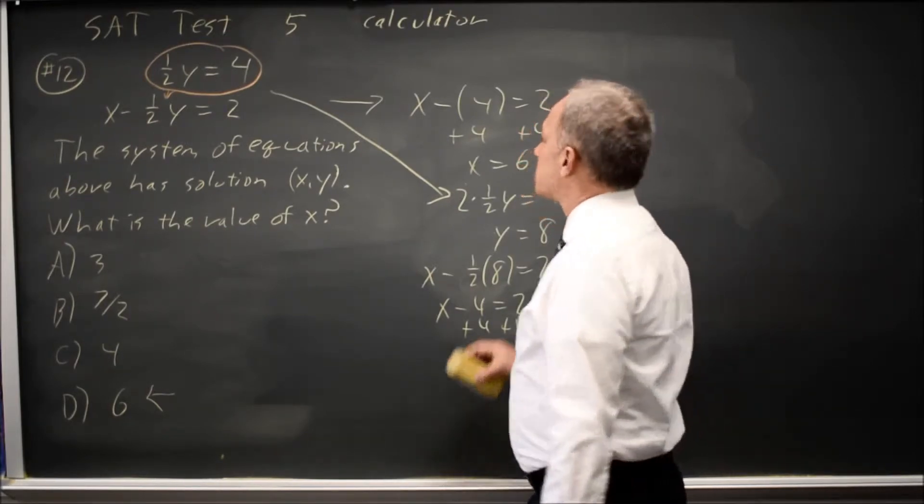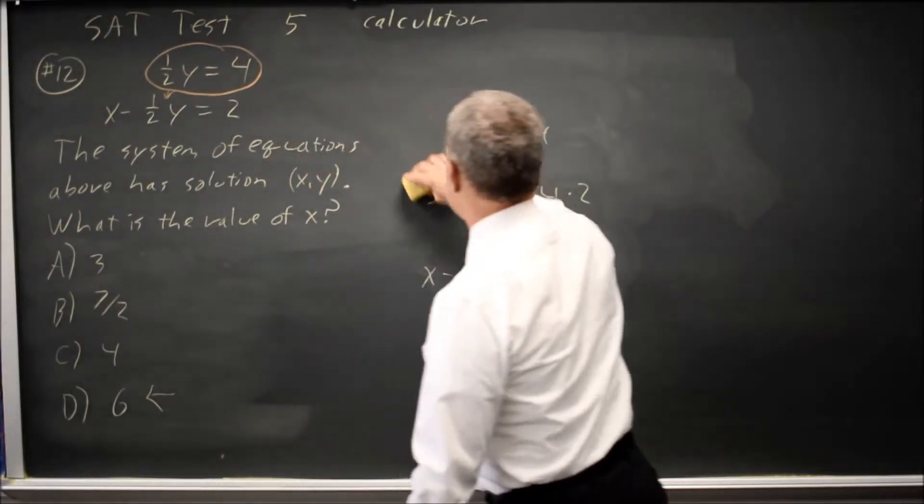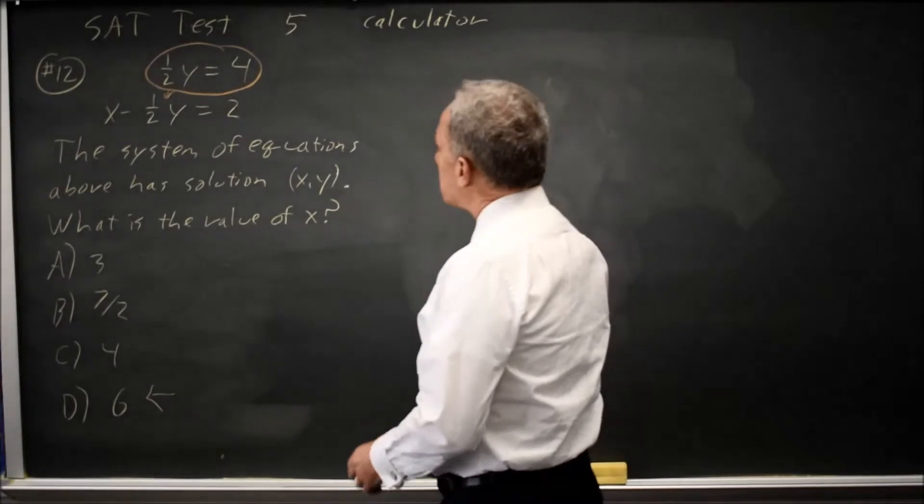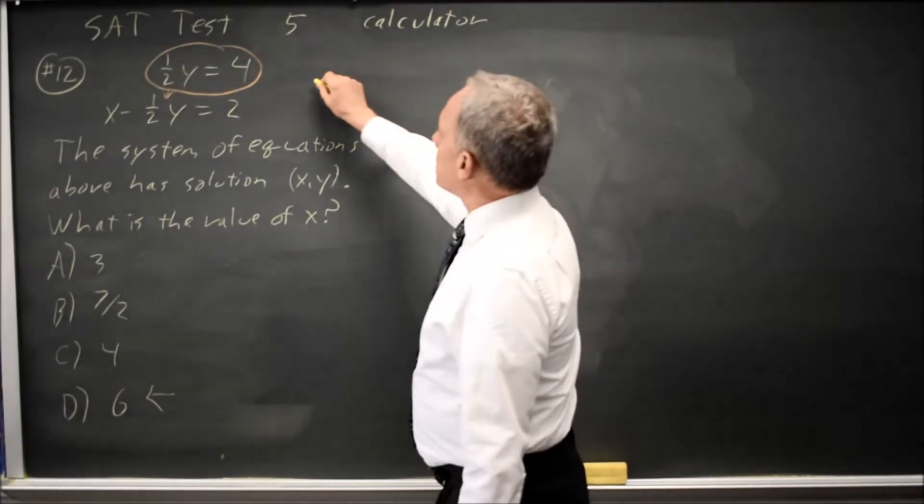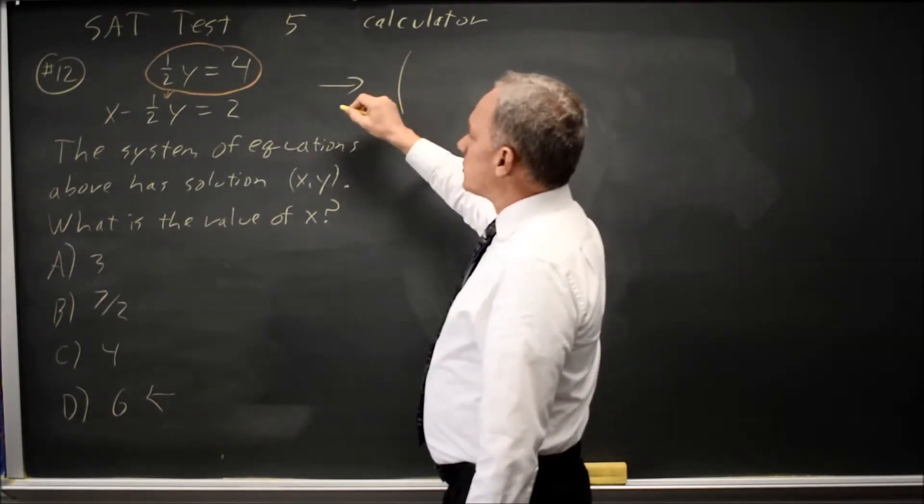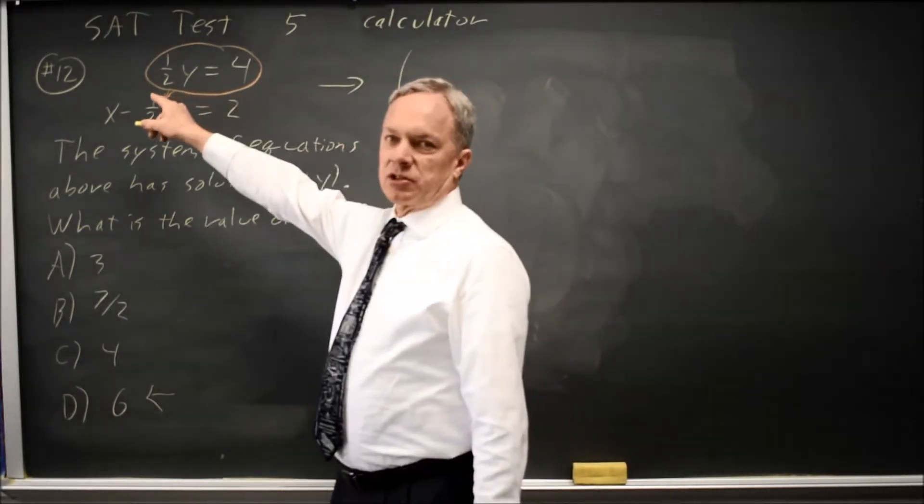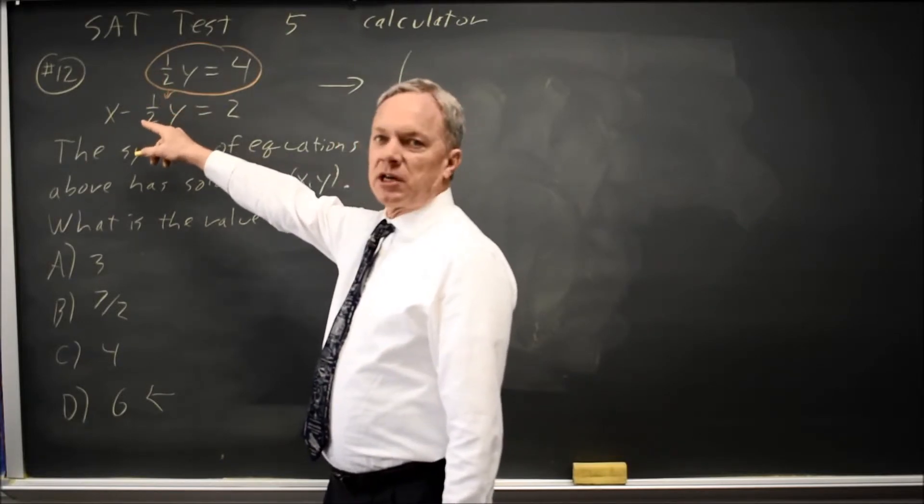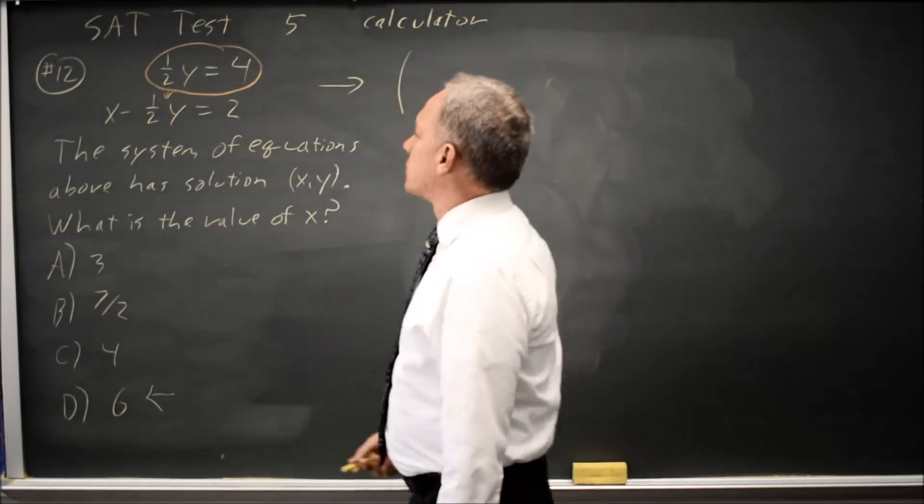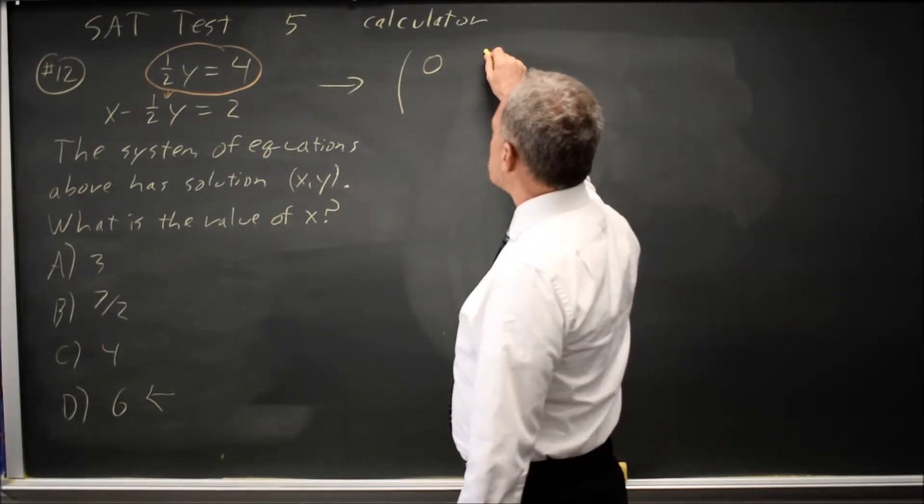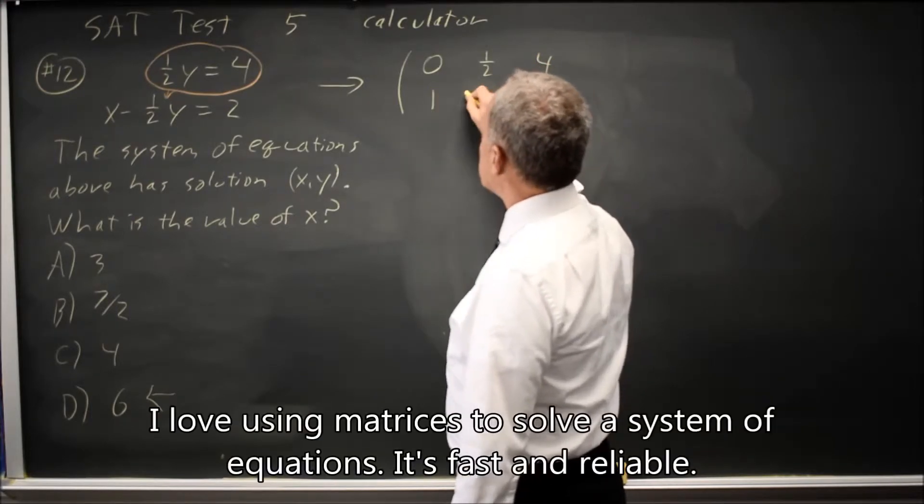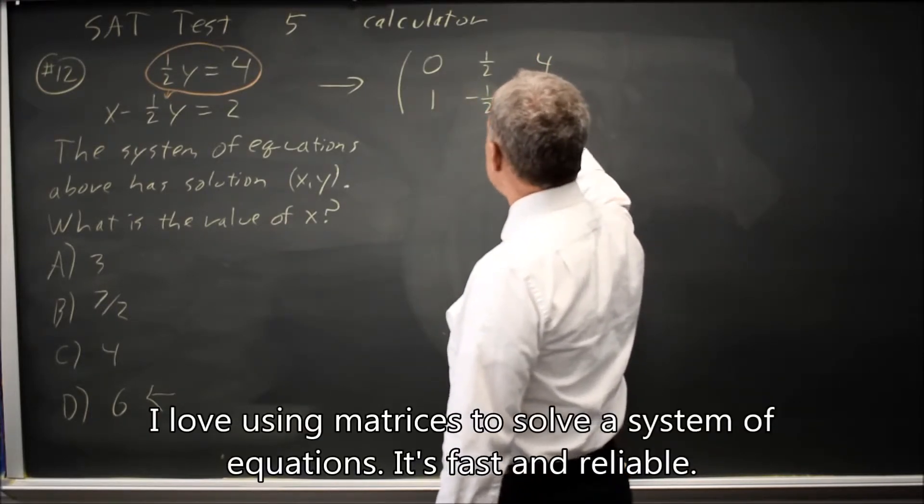A third option, since this is a calculator question, is matrices, which is my favorite method for calculator questions. I can rewrite this system as a matrix with two rows and three columns. Even though there's no x term, I can still read this as x and y in order left to right in both equations equals a constant on the right for both. So that's 0x plus 1 half y equals 4, and 1x minus 1 half y equals 2.